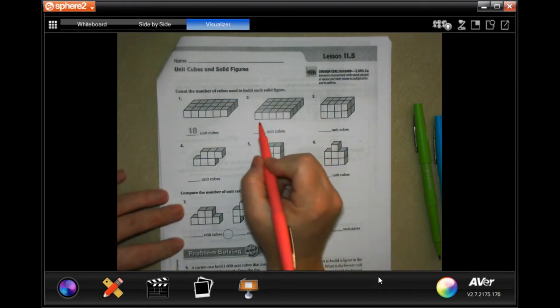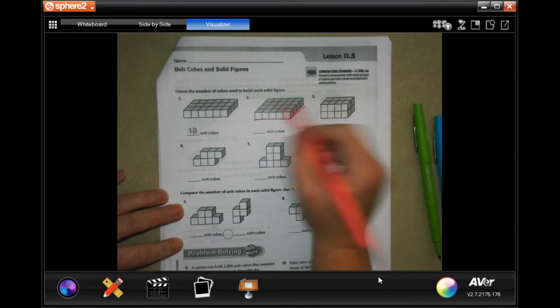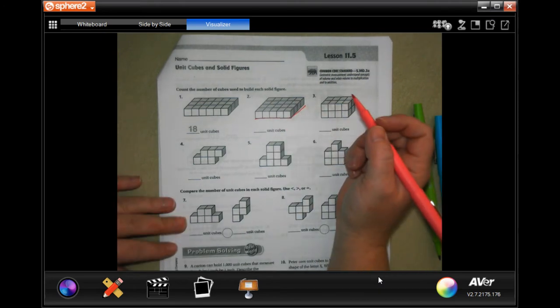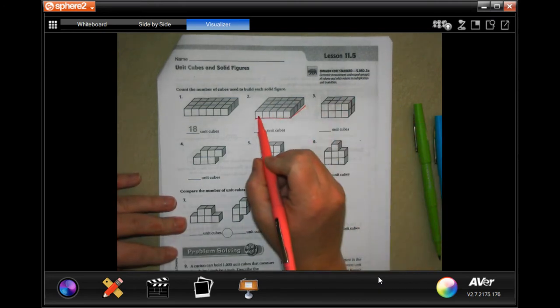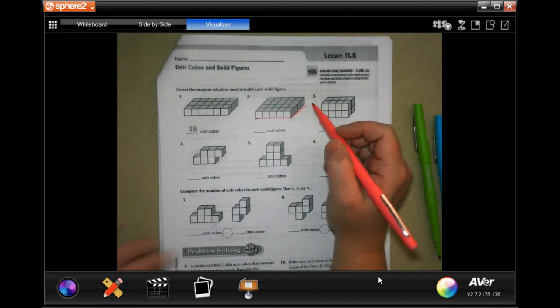So all we're doing is we're taking the length and multiplying it by the width, or we're counting how many blocks. So, we have 1, 2, 3, 4, 5 times 1, 2, 3, 4, that's 20.